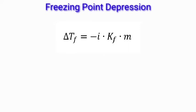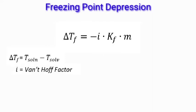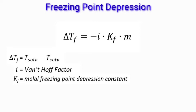The next topic is freezing point depression, which is the decrease of the freezing point of a solvent upon the addition of a solute. The equation is delta T equals negative i multiplied by K_f multiplied by m. Delta T is the change in freezing point, i is the van't Hoff factor representing how many particles the solute breaks into — for non-electrolytes i equals 1. K_f is the molar freezing point depression constant, and m is the molality.